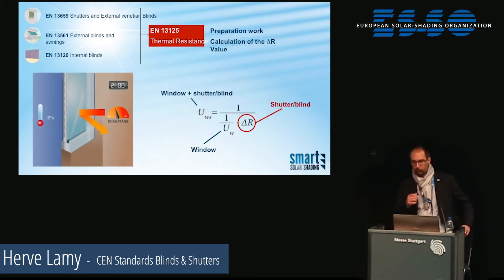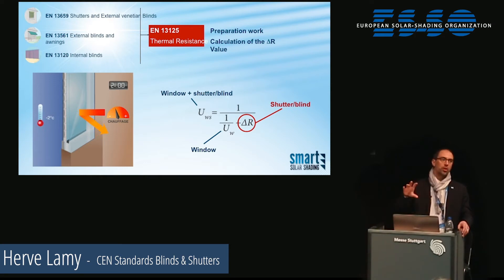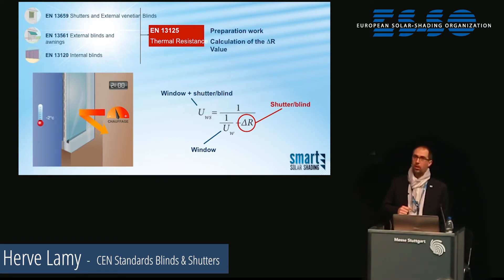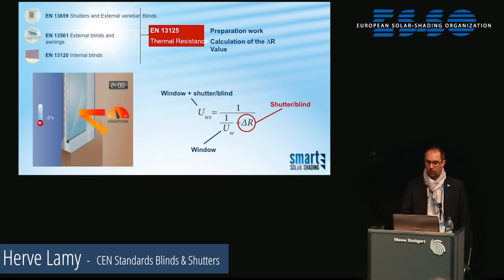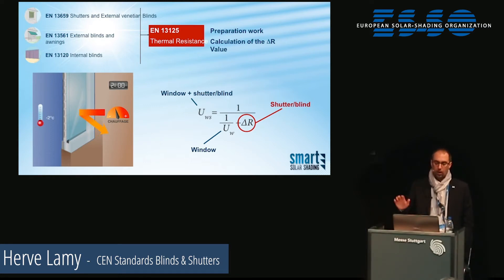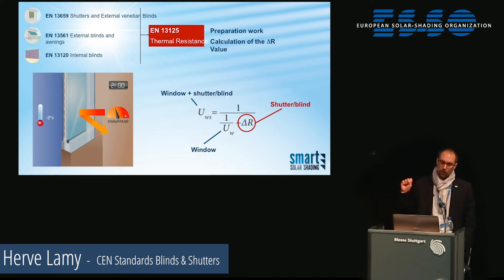The next standard under revision concerns additional thermal resistance — the characteristic representing the additional insulation brought by shutters or blinds when closed in front of a window. This is called delta R. The equation involves the U-value of the window with the shutter versus the U-value of the window alone, expressing how the shutter or blind increases insulation capacity. We just started the revision of this standard. The reason is that the first version was established about 20 years ago, and at that time this characteristic was not so recognized — only the shutter industry was using it.